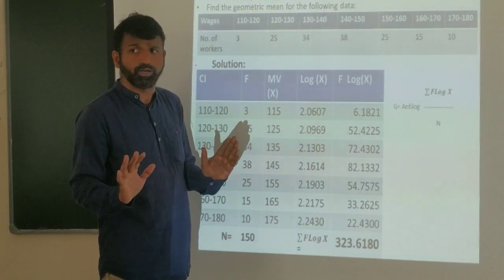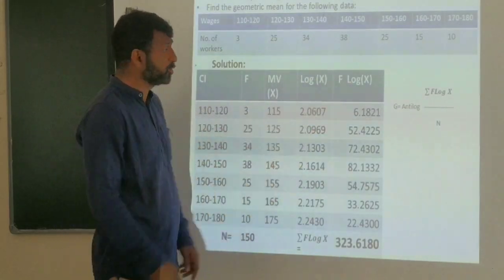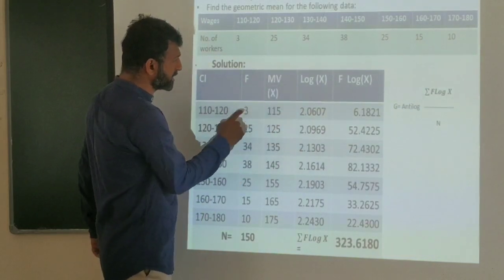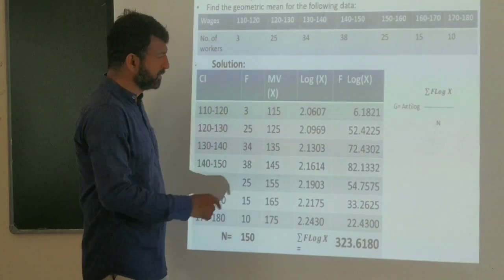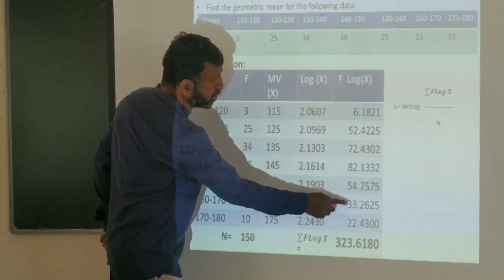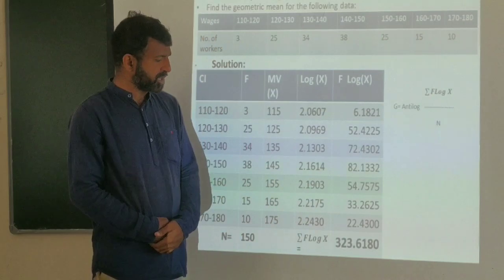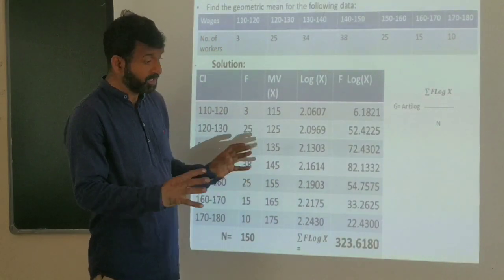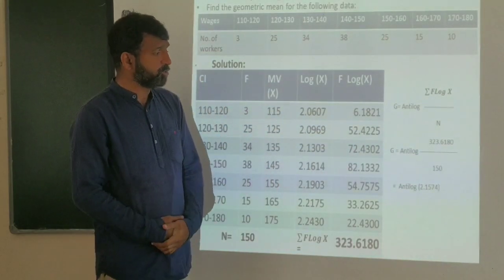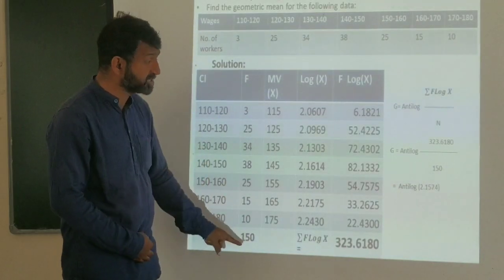We need the total of the sum of F times log X. Each log x mid-value is multiplied by its corresponding frequency — for example 2.0601 multiplied by frequency 3 gives the f log x value. The total sum of f log x is 323.6180. G equals antilog of 323.6180 divided by 150, which gives antilog of 2.15724.